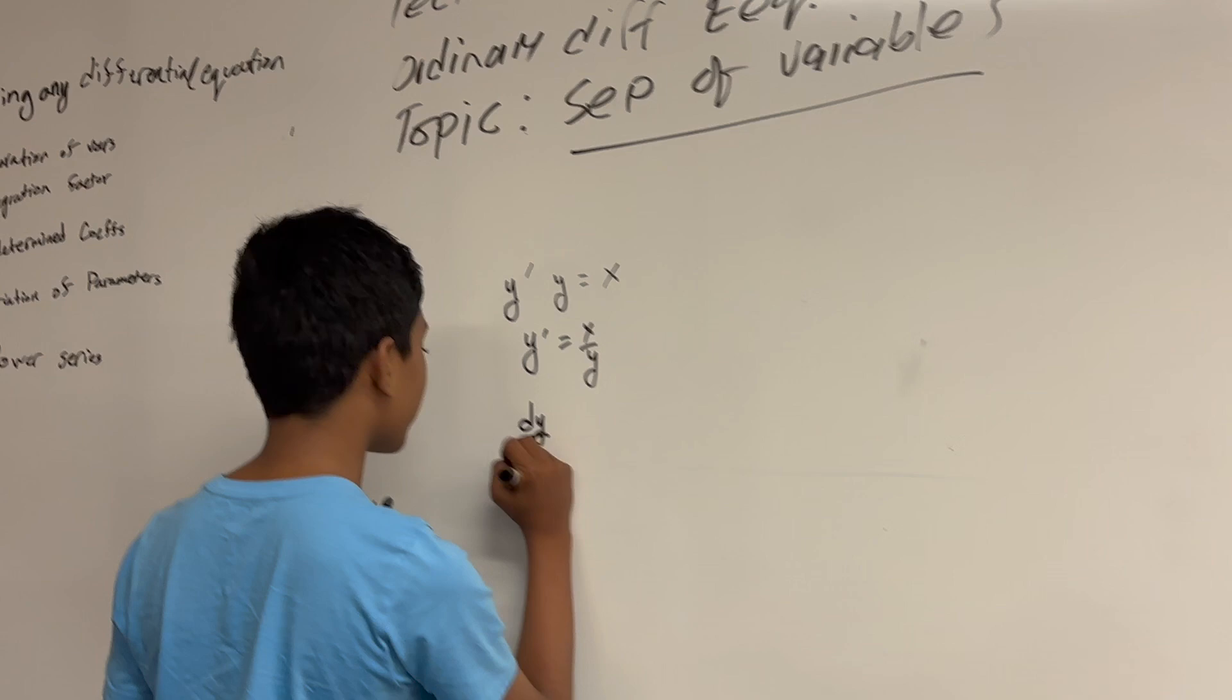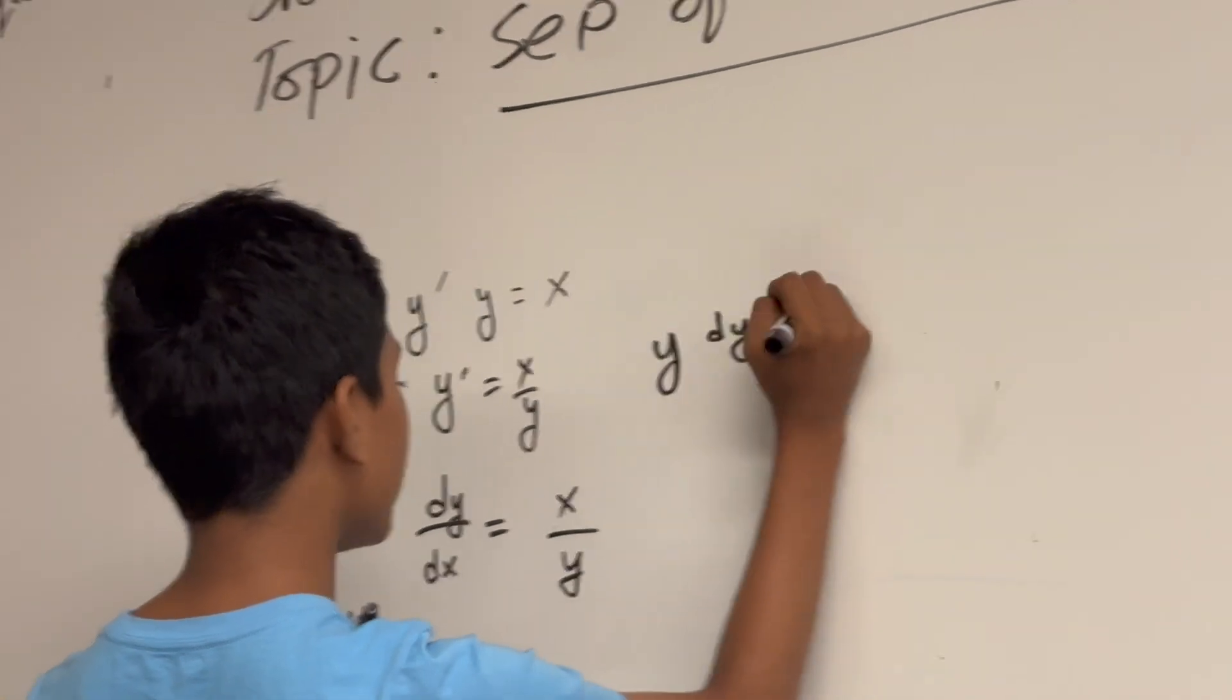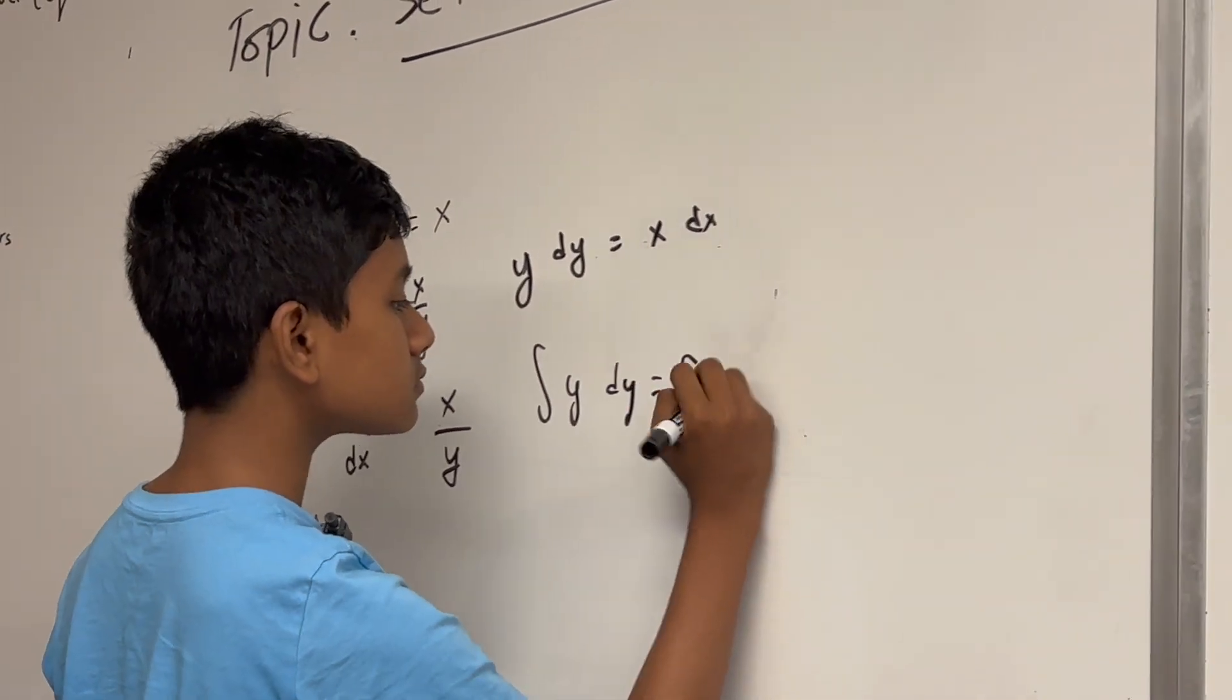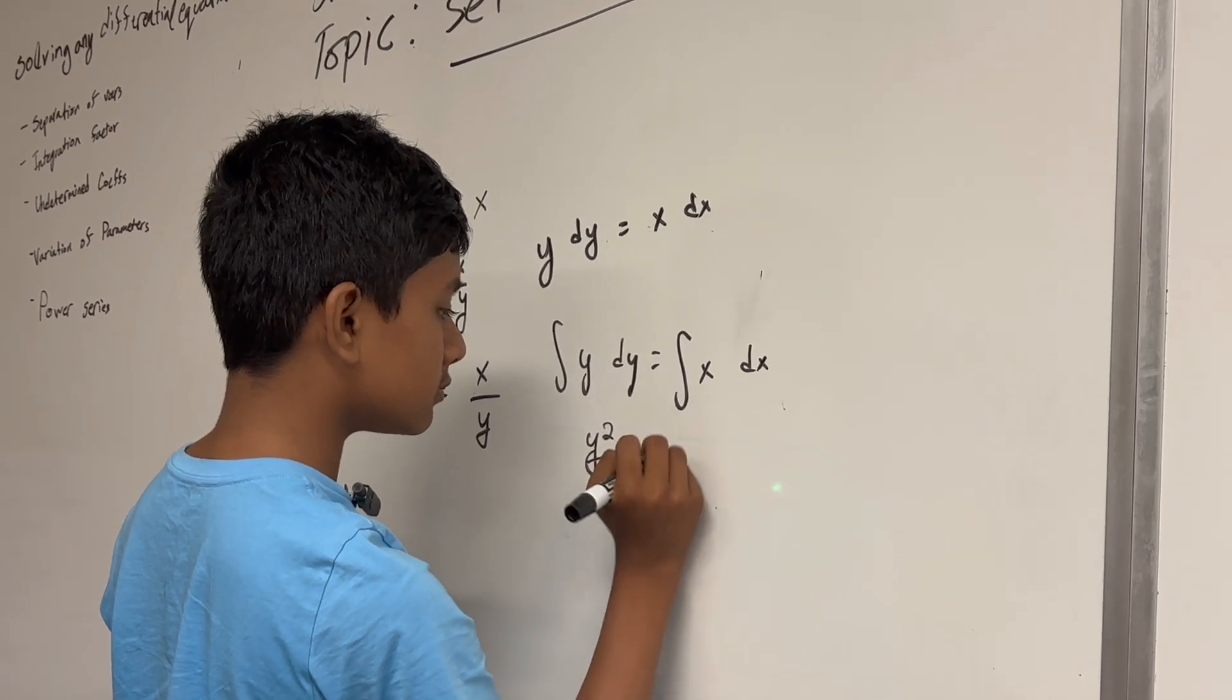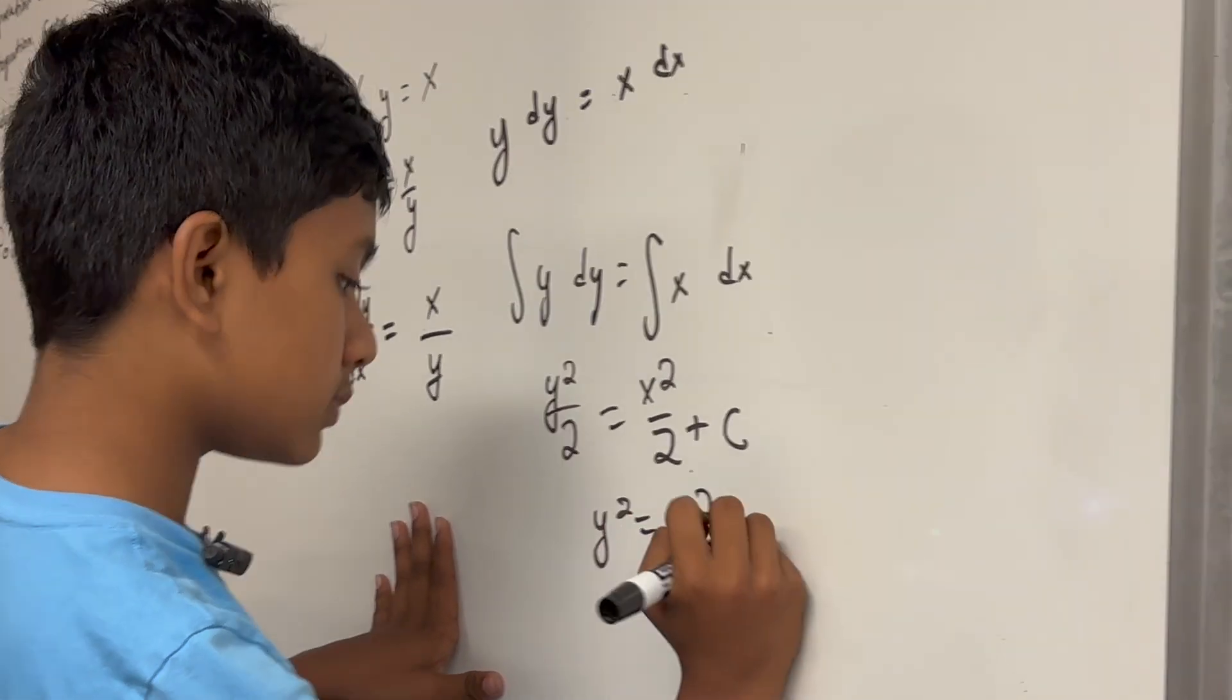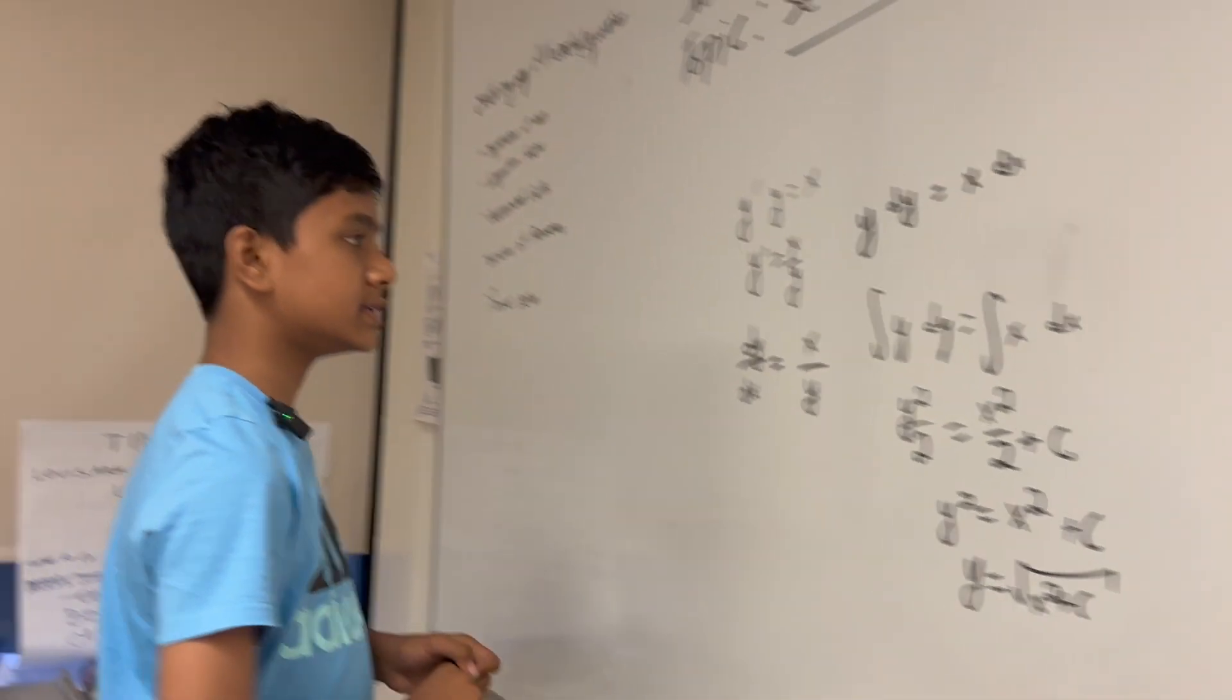Now all you have to do is rewrite y prime as dy dx. You get y on the side with the dy and x on the side with the dx. Then you integrate both sides, which means y squared over 2 equals x squared over 2 plus c, or in other words, y squared equals x squared plus c. So y equals the square root of x squared plus some number c.